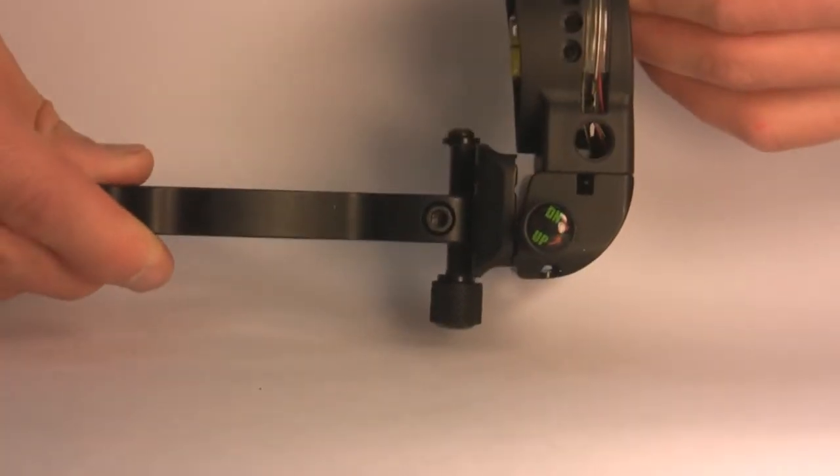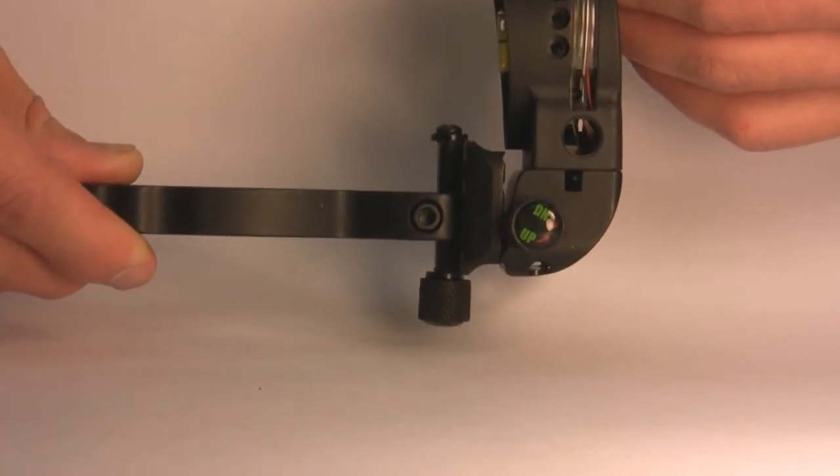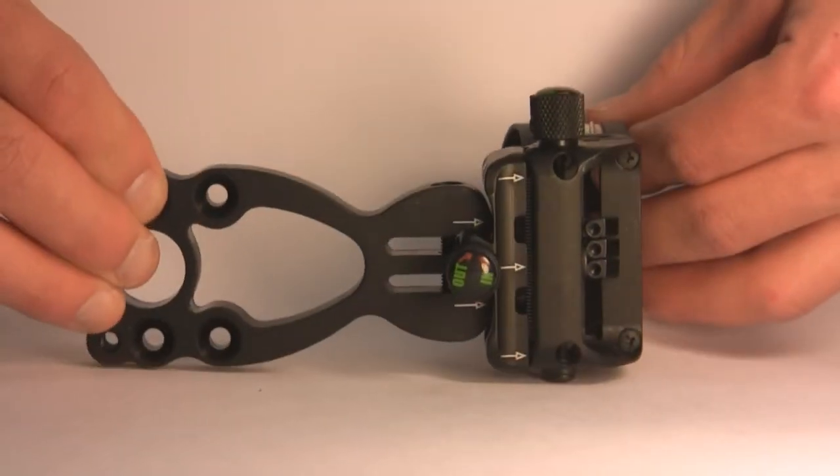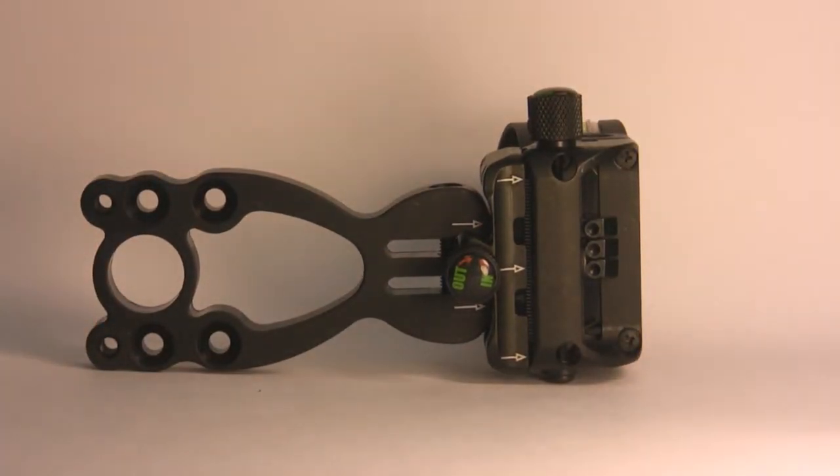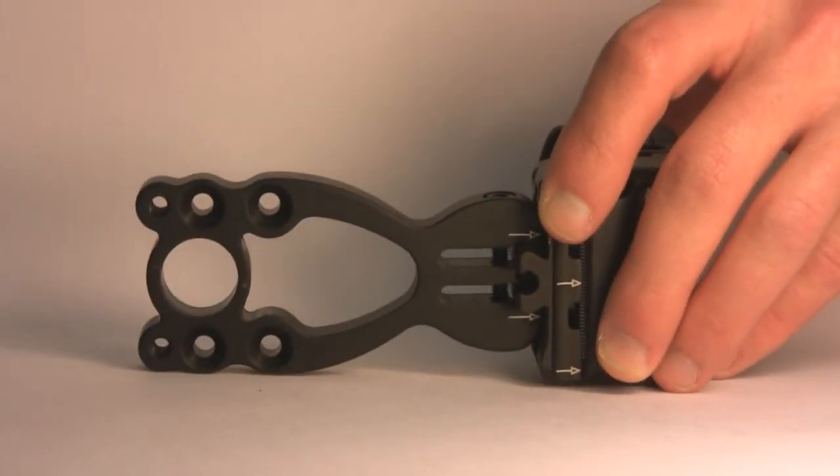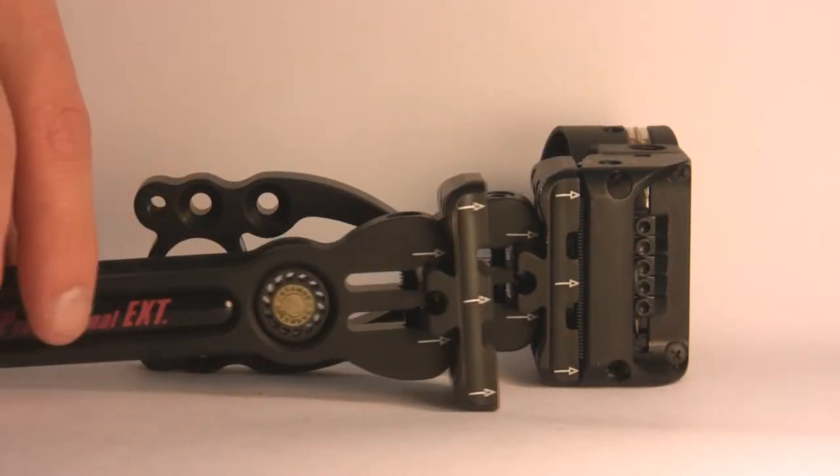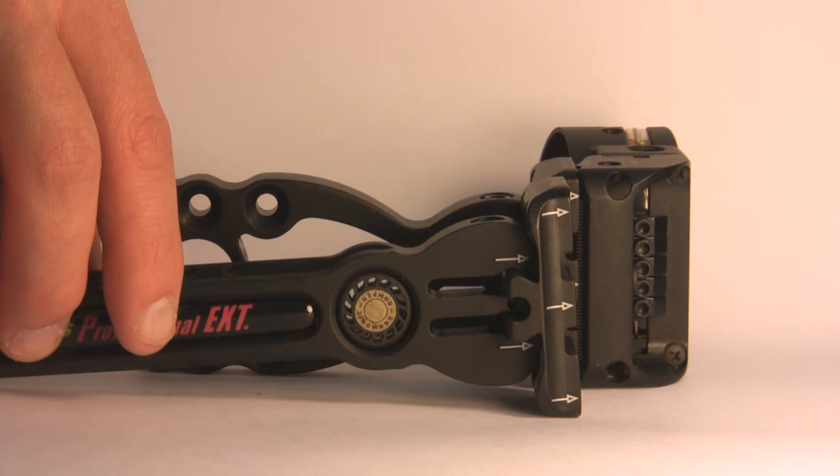Here's a micro adjustable model. The micro adjust works on the windage and elevation of the sight. You can also add a dovetail to this sight if you'd like to. Dovetail mounts are very easy to add and they're very easy to adjust.